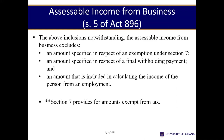Now let's look at the exclusions from your business income. Generally, there are exemptions from taxation which under Section 7 of Act 896 are clearly stated. For example, income of a cocoa farmer is exempted from tax. If you're operating within a free zone area, your business is exempted from tax for 10 years. Those exemptions as granted under Section 7 are all excluded from business tax. Also, if there is any payment in respect of a final withholding tax, that tax payment is also not part of your business income.